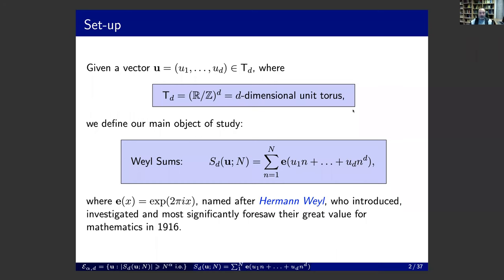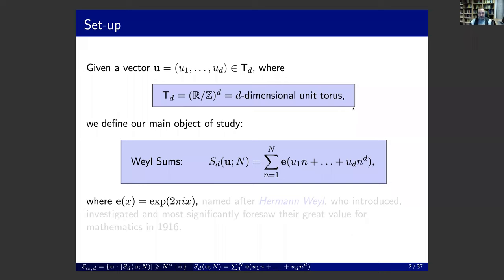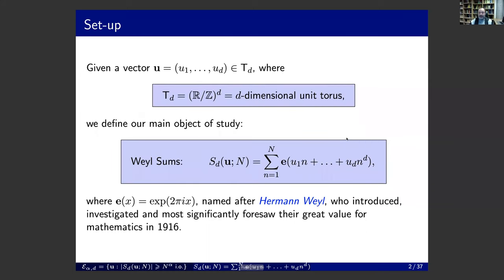Our main object of study is the following Weyl sum, which we denote as S_{d,u,n}. It depends on three parameters: d is the degree of the polynomial in the exponent, u_i's are the coefficients, n is the variable of summation, and e(x) is the exponential function with coefficient 2πi. These are all unit vectors.